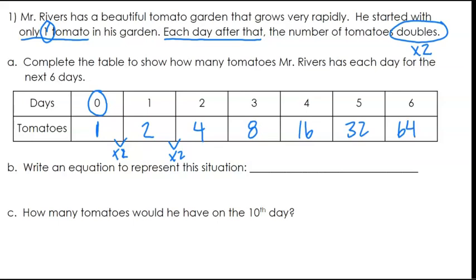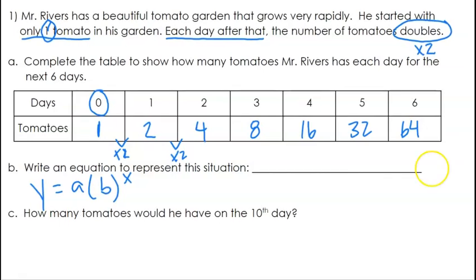Write an equation to represent this situation. So we're going to use that y equals a times b to the power of x. And we just need to get a number for a and a number for b.